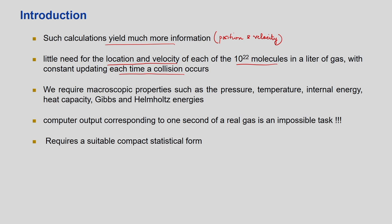Our objective is macroscopic properties such as pressure, temperature, internal energy, heat capacity, or Gibbs and Helmholtz energy. These have already been calculated using the laws of thermodynamics — you can calculate these through Gibbsian laws. But where does this information come from in the microscopic sense? It comes from information about the microscopic state of the system.